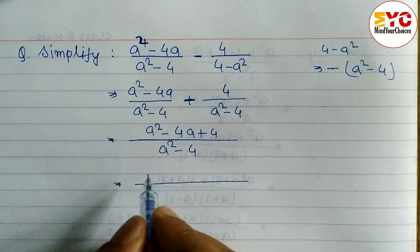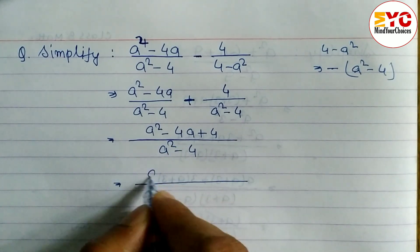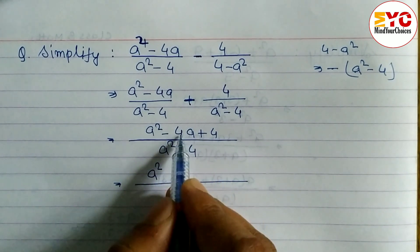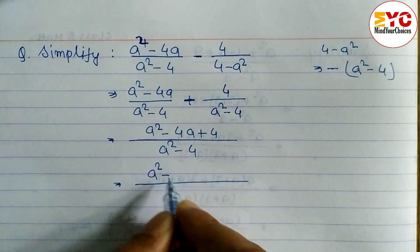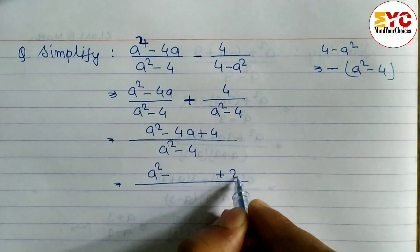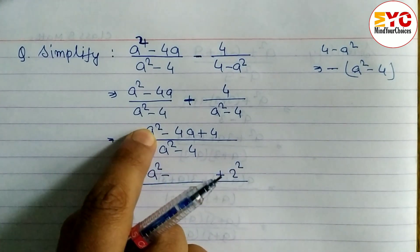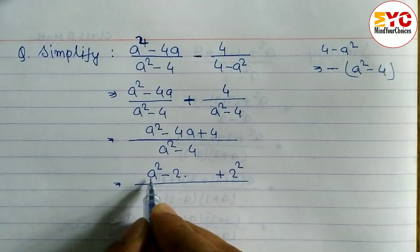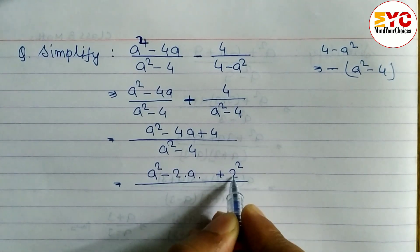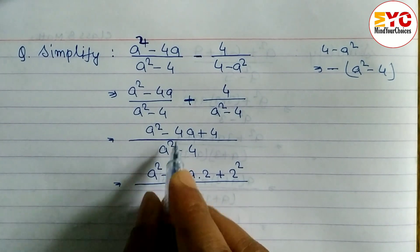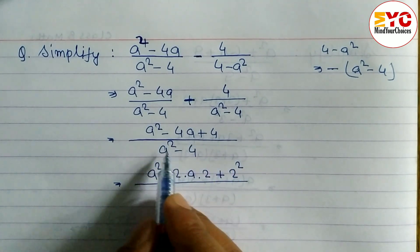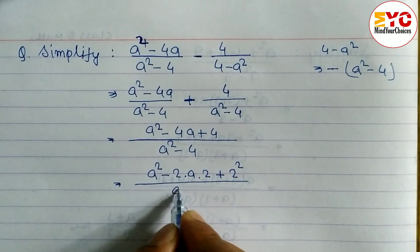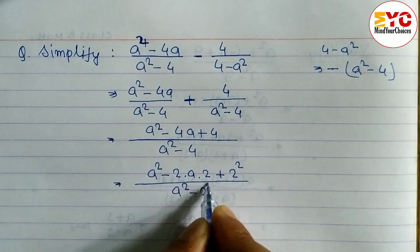Now we can convert the numerator into the form of a squared minus 2ab plus b squared. You can factorize by writing 4 as 2 plus 2, or convert using the formula. Here, in place of a we have a, and in place of b we have 2. So 2 times 2 gives 4, and 2 squared gives 4 — this fits the formula. We can also write the denominator a squared minus 4 as a squared minus 2 squared.